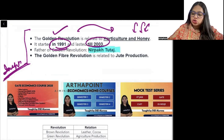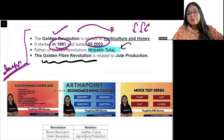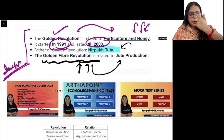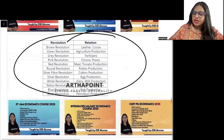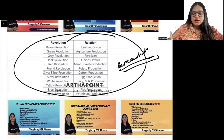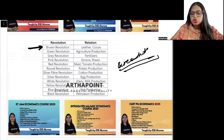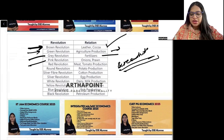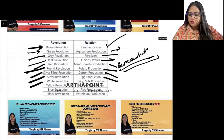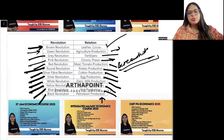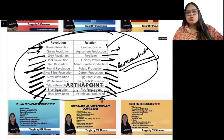The father of golden revolution is Nirpakh Tutaj. Golden fiber revolution is related to jute production. Here are the other important revolutions: Brown — leather and cocoa; Green — agriculture; Gray — fertilizer; Pink — onions; Red — meat and tomato; Round — potato; Silk fiber — cotton; Silver — eggs; White — dairy products; Yellow — oilseeds; Blue — fish production; Black — petroleum production. Take a screenshot and remember these.